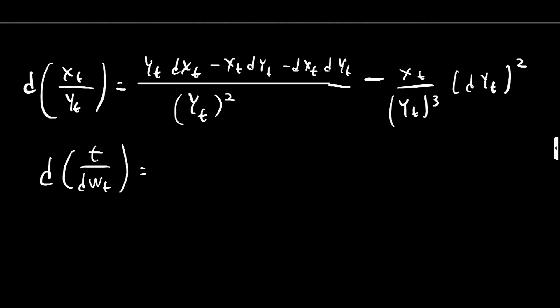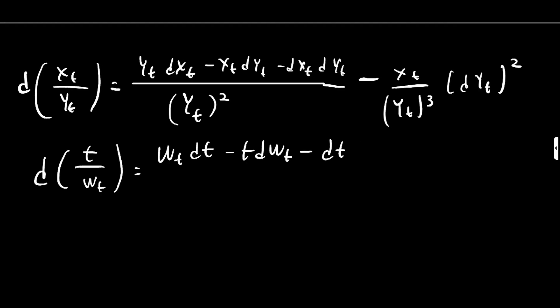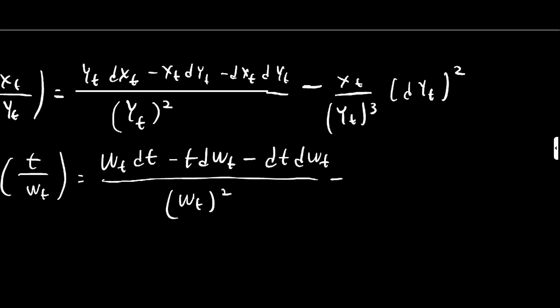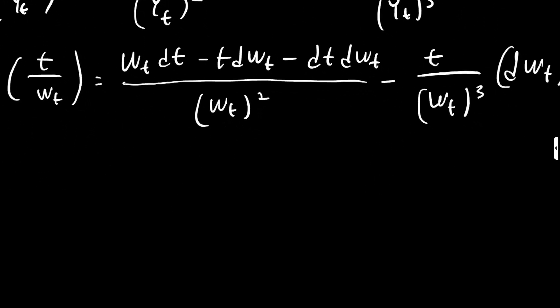So let's go ahead and do this. Let's say I asked you to find the derivative of t over W_t. To do this you're going to get, it's going to be W_t dt minus t dW_t minus and then the derivatives multiplied together, and hopefully you're going to realize that this is just going to be an identity, all over the square of W_t, minus t over W_t cubed times the derivative which is dW_t squared.